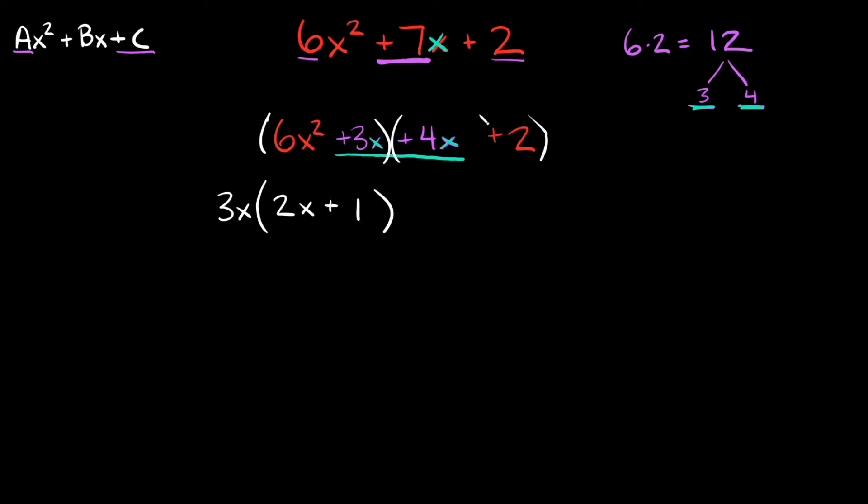Then we can move on to this one and factor this one. So here we have a positive 4x plus 2. Both of these we can factor out a positive 2. And then what's going to be left inside of our parentheses here? Well just to be clear whenever you pull something out or factor something out it's basically the same thing as dividing.